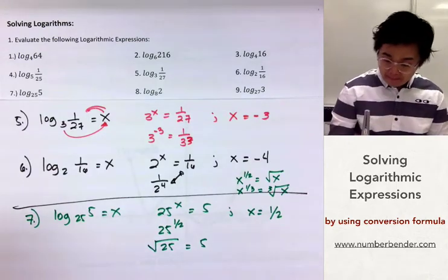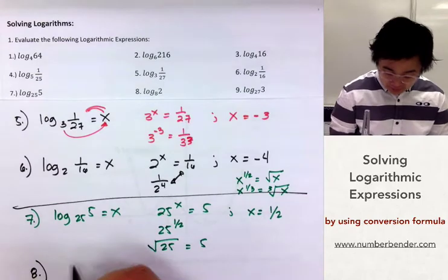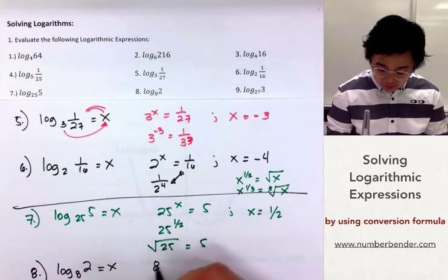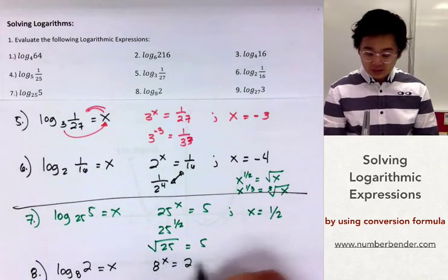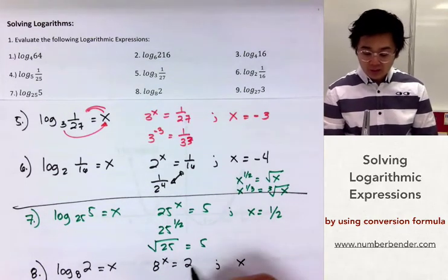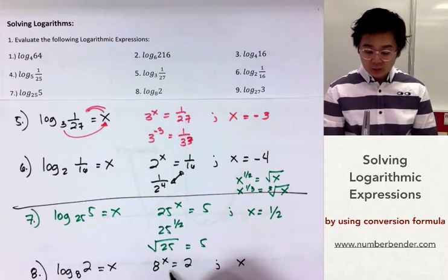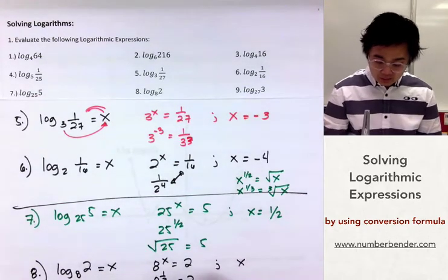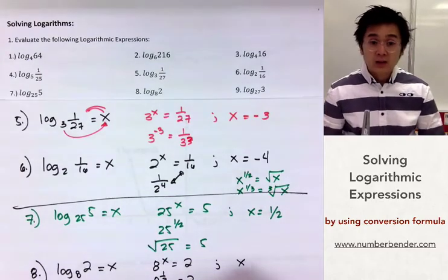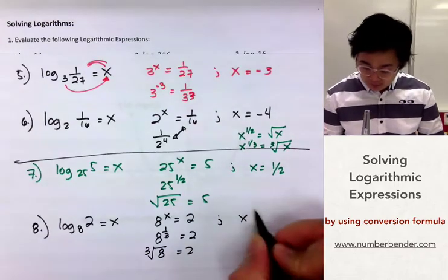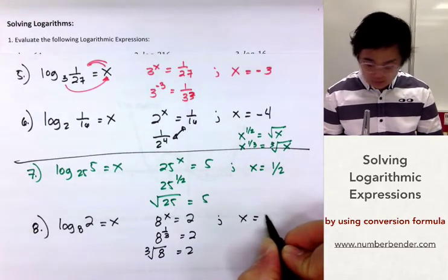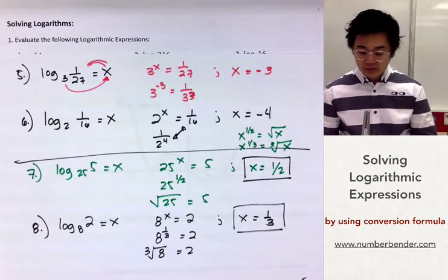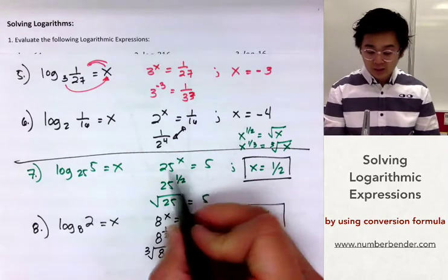For number 8: log of 2, base 8, equated to x gives us 8 raised to x equal to 2. We know that 2 raised to 3 equals 8, and since we're looking for a fractional exponent to make the bigger number smaller, x will be 1 over 3, because the cube root of 8 equals 2. So x equals 1 third.